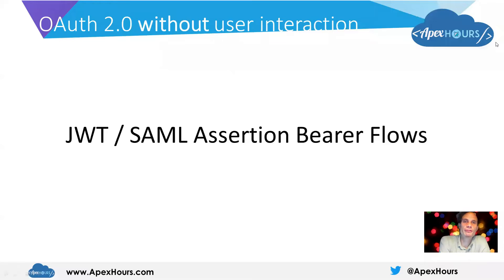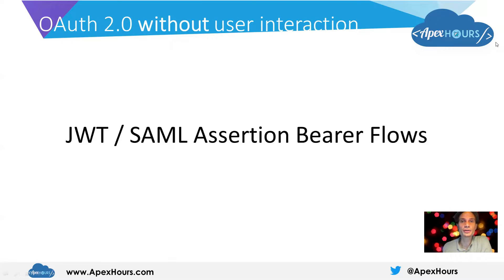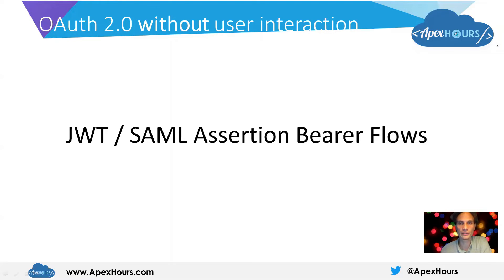I'll run through two flows used for server-to-server integration where user interaction isn't involved: the JWT Bearer flow and the SAML Assertion Bearer flow. These two flows share quite a lot of commonalities, so I'll talk about aspects relevant to both as well as some specifics for each one.